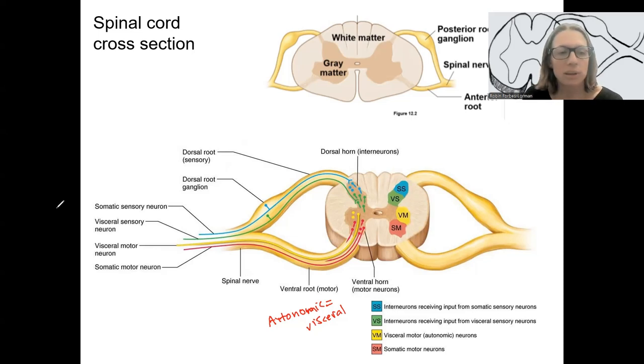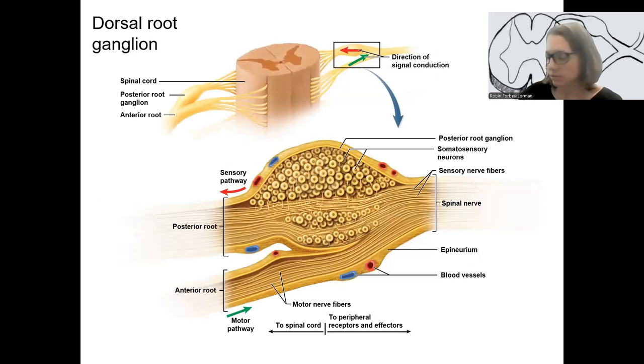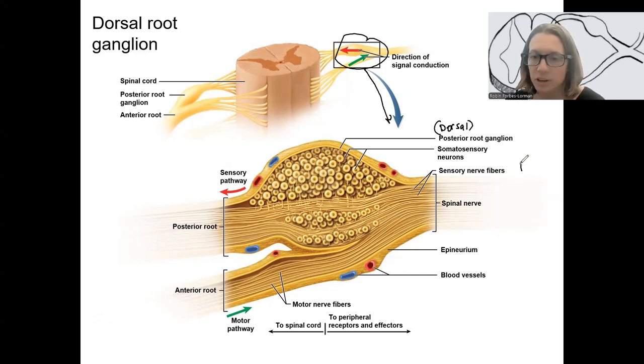One more image I want to show you is I want to zoom into the dorsal root ganglion. So that looks like this, right? We're zooming in to that big bulge that comes off of the dorsal side right here. Zoom in there. This is what it looks like. Contains - remember, posterior is the same as dorsal. Same thing. What does it contain? Cell bodies of sensory neurons. So those sensory neurons are coming from the periphery, maybe the skin, lots of different sensory, or it could be internal senses.